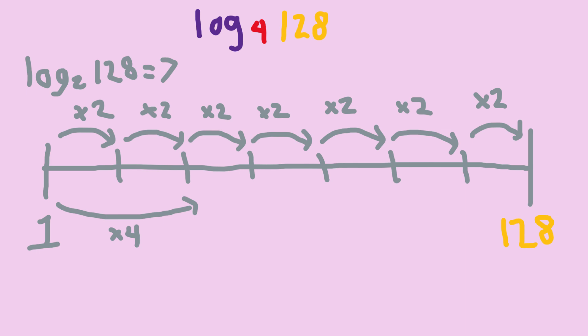So, log base 4 of 128 is log base 2 of 128 divided by log base 2 of 4, which is 3.5. This is a very useful idea, since if we know log values when counting in one way, we know log values when counting in any way.